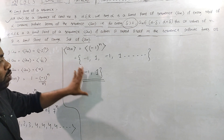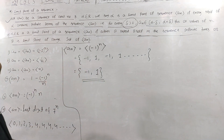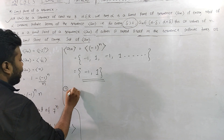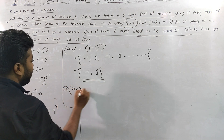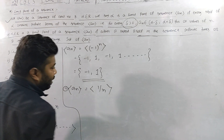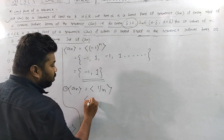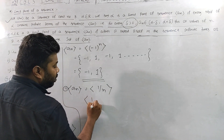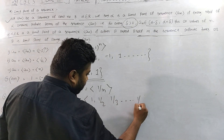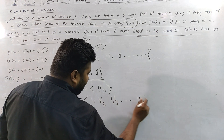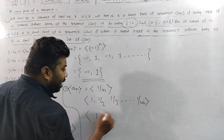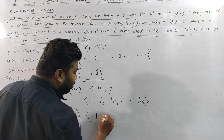The first question: consider a_n = (-1)^n, or the sequence minus one and one. The second question: consider a_n = 1/n. The sequence is 1/1, 1/2, 1/3, dot dot dot, and 1/n goes to zero.